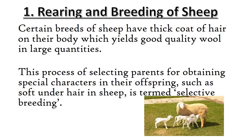The first step is rearing or breeding of sheep. Certain breeds of sheep have a thick coat of hair on their body which yields good quality wool in large quantities. The process of selecting parents for obtaining special characters in their offspring, such as soft under-hair in sheep, is termed selective breeding. In this process, good quality sheep are taken care of so that the same characters can be transferred to their offspring.